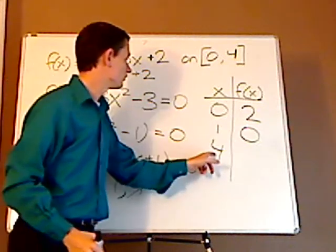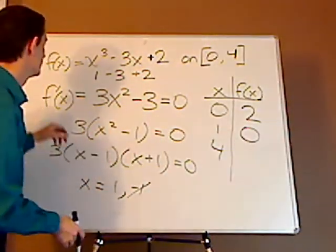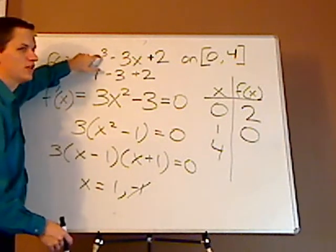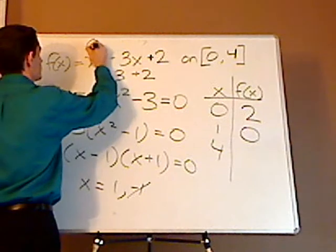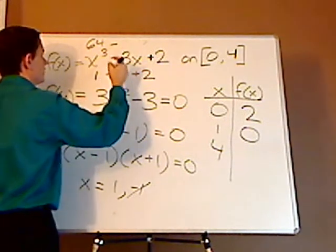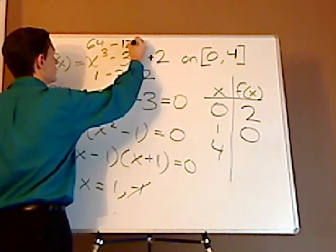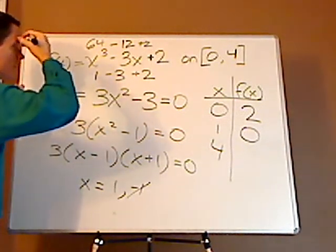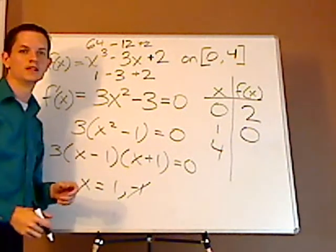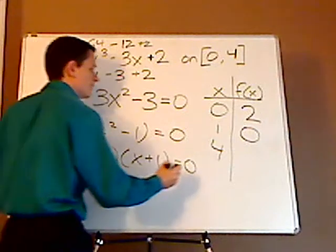And then you plug in 4. If you have a calculator, use your calculator. 4 cubed is 64. So that's 64 minus 3 times 4 is 12, plus 2. So then I have 64 minus 12, that's 52, plus 2. That gives me 54.